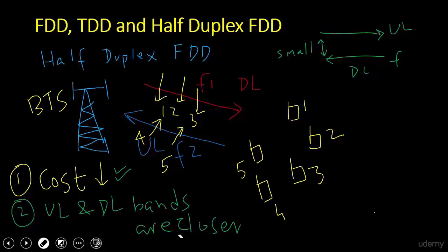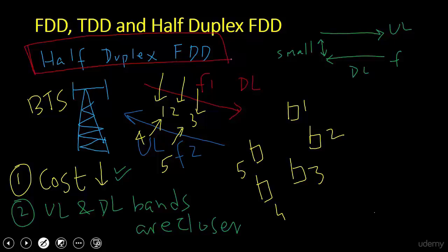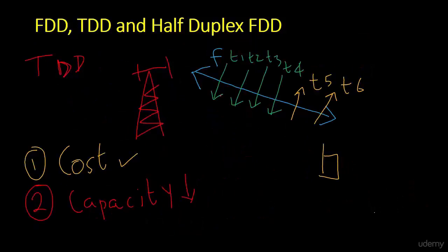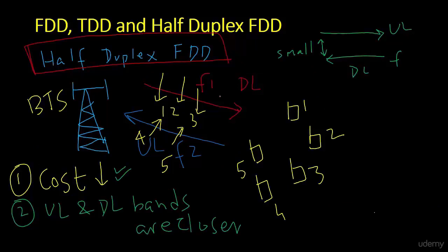In summary, the choice between FDD, TDD, and Half Duplex FDD depends on the operator's requirements. If you have an unpaired spectrum with asymmetric uplink and downlink utilization, TDD is a good solution. If you need more capacity and have larger bandwidth, FDD is the choice. If you want to reduce device cost and there is small separation between uplink and downlink spectrum, Half Duplex FDD is the best option.